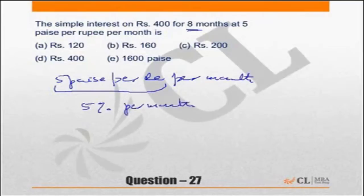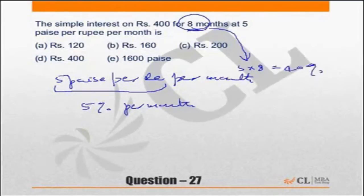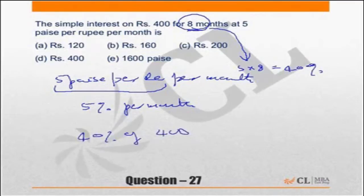For 8 months, your rate of interest will be 5 into 8, which is equal to 40%. So what is the interest? Interest is 40% of 400, which is equal to 160.